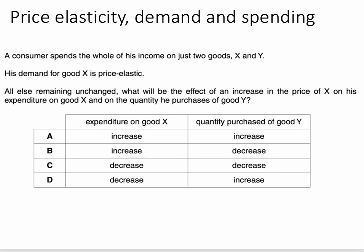OK, so the answer to this question — what did you get? The price of X has gone up, they're only buying two goods, X and Y. The answer is D: they're going to spend less on Good X, and they're going to buy more of Good Y.